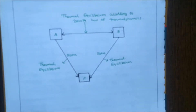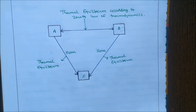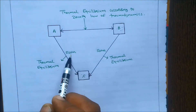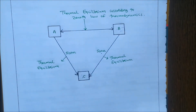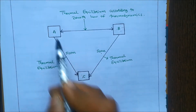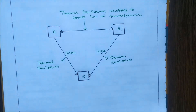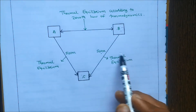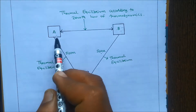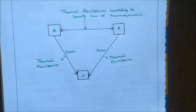We consider three persons: person A, person B, and person C. The relation between A and C is that they are sisters, and the relation between B and C is that they are also sisters. So you can easily identify the relation between A and B — if A and C are sisters and B and C are sisters, then automatically A and B are also sisters. This is the concept of zeroth law of thermodynamics: if A and C are in thermal equilibrium and B and C are in thermal equilibrium separately, then system A and system B are also in thermal equilibrium.